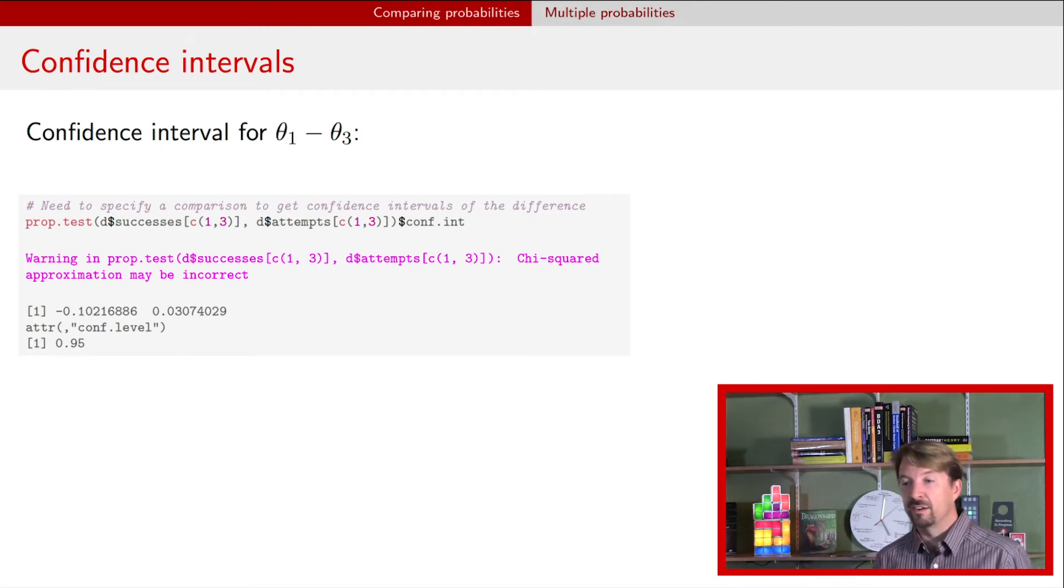We have that same warning here. We didn't do the hypothesis test, but that would be output from this particular function. But the confidence interval here is between minus 0.1 and about 0.03, right? So 0 is within that confidence interval. So the p-value we know would be greater than 0.05. And it seems like the data are compatible with those two having the same probability of success.